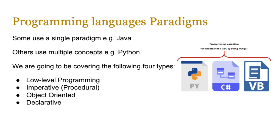Programming paradigms are just an example of a way of doing things. Assembly language has one paradigm which is the low-level paradigm — it doesn't use imperative or declarative. Python has multiple paradigms, for example it can use imperative, classes, and so on. Other programming languages would probably use a single paradigm, for example object-oriented or declarative.